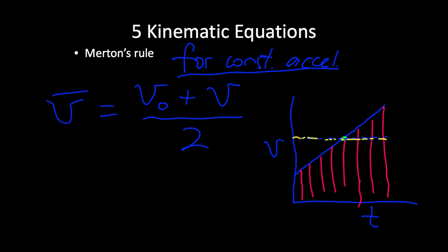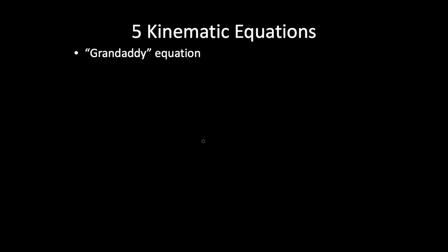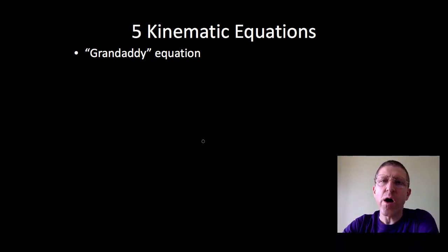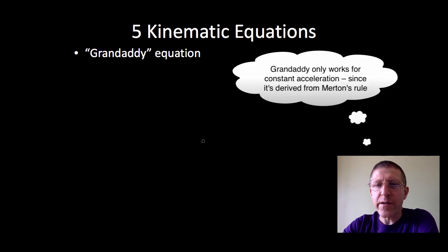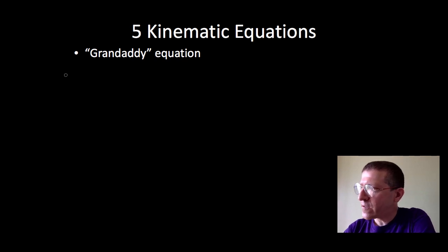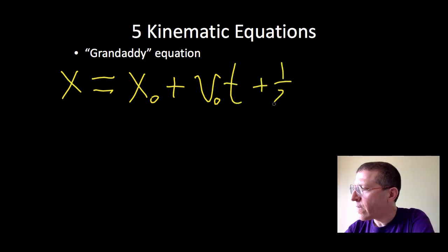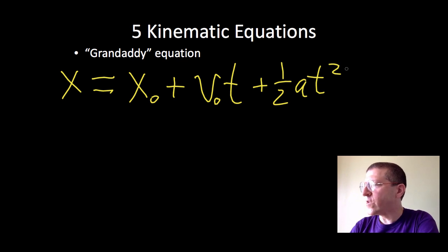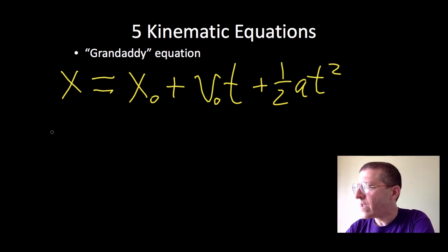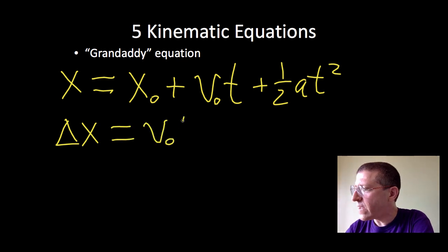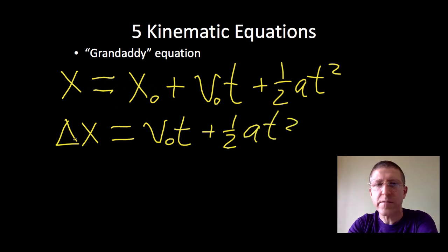Next up, the granddaddy equation — I call it that because it's the granddaddy of them all. It can be derived from the other three equations already mentioned, and you can look back at the honors physics videos to see that derivation. The granddaddy equation is: x final equals x naught plus v naught t plus one-half a t squared. Moving x naught to the other side gives delta x equals v naught t plus one-half a t squared.